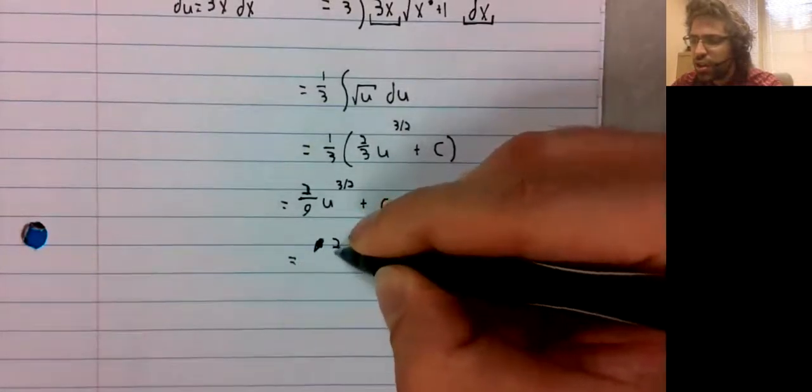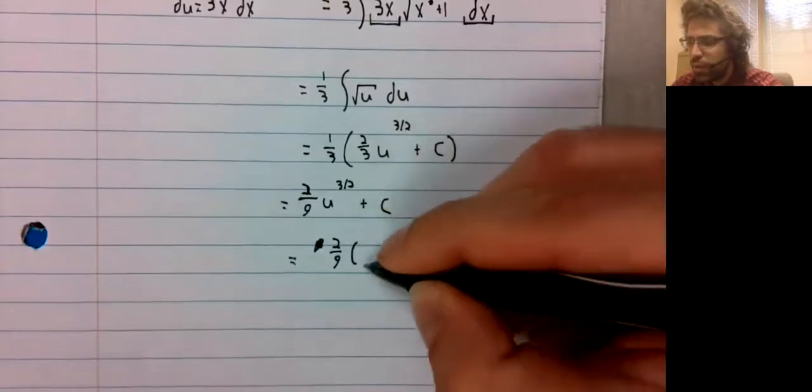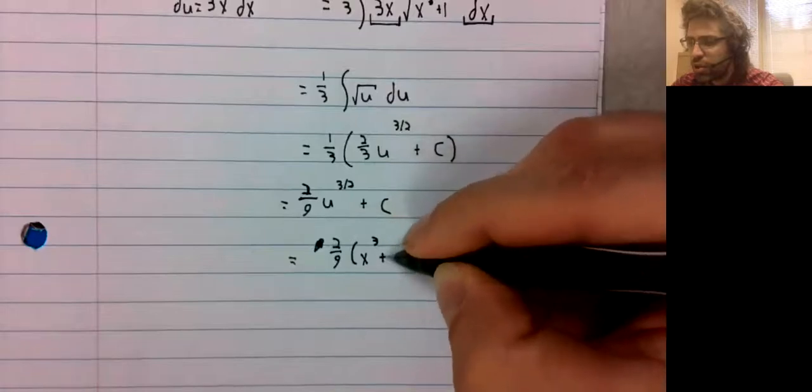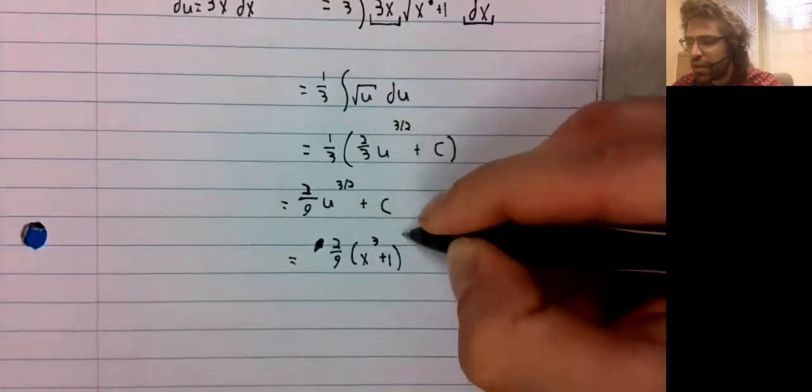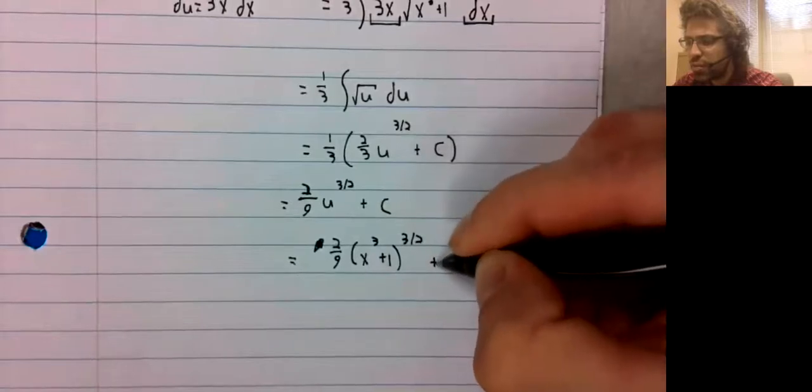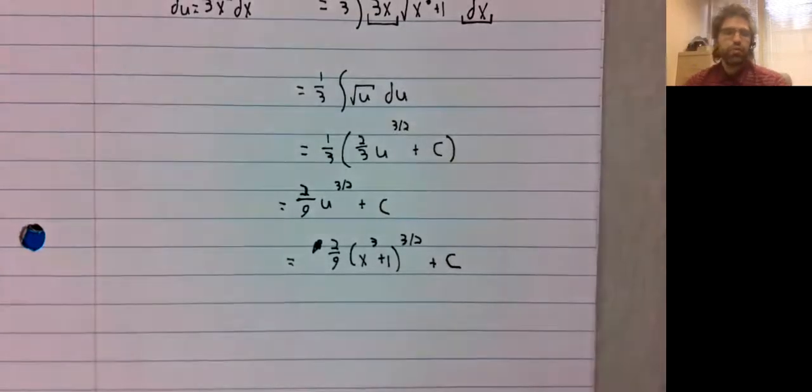Finally, u is a dummy variable. It's not something we want to have in our final solution. But fortunately, we can get rid of it.